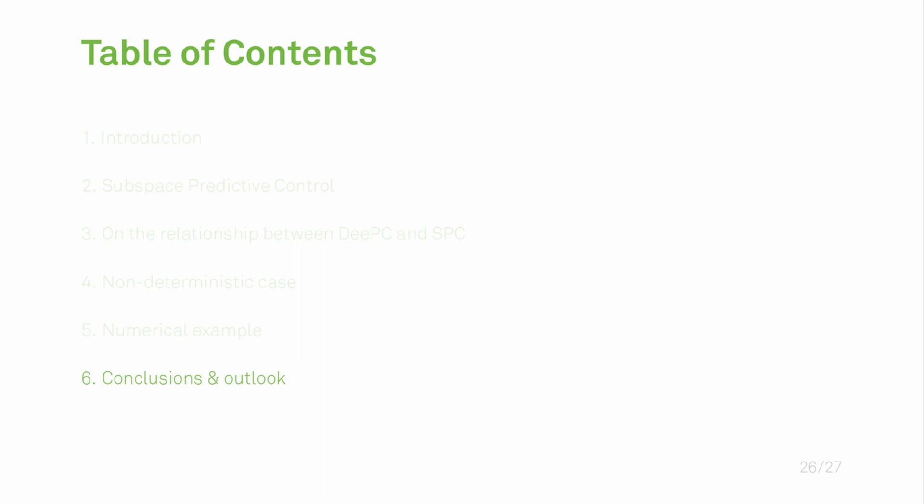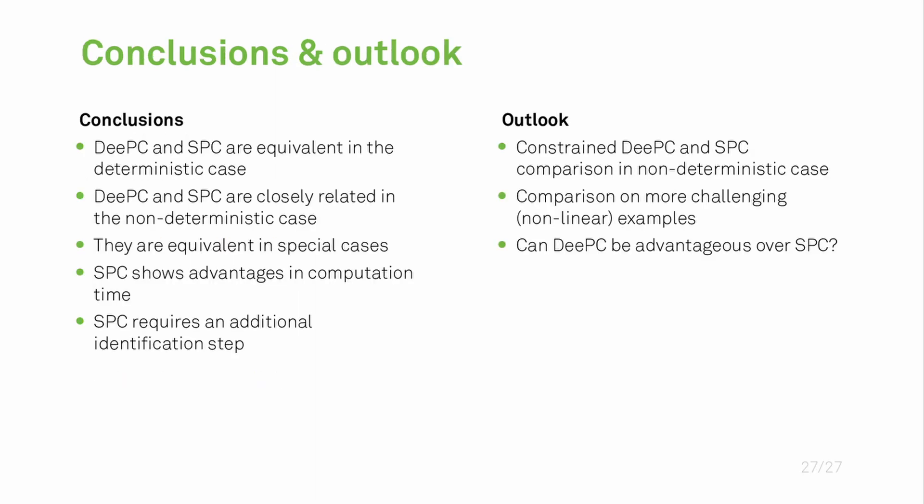This brings me to conclusions and outlook. In this work we have found that DeePC and SPC are equivalent in the deterministic case and that they are closely related in the non-deterministic case. Even there they are equivalent in special cases which are shown in theorem two. We have also shown in the numerical examples that SPC shows advantages in computation time, but SPC requires an additional identification step which is not necessary with DeePC. As an outlook, we want to further compare these two methods for the non-deterministic case, for example with the constraint formulations or with more challenging examples. We are also trying to answer the question if DeePC can be advantageous over SPC, for example when re-estimating the prediction model by updating data matrices is beneficial.